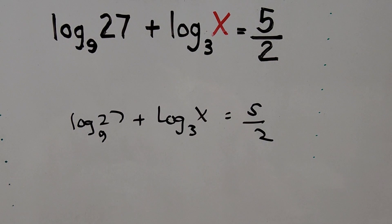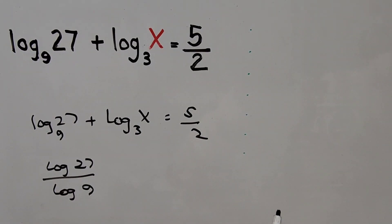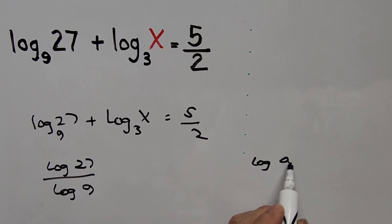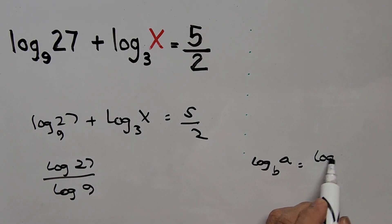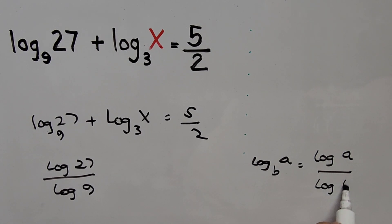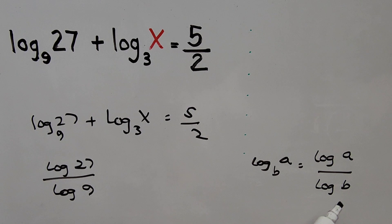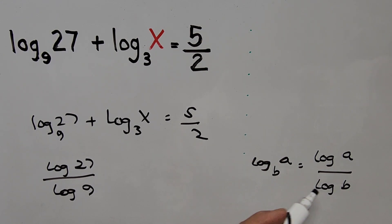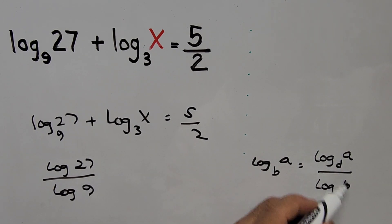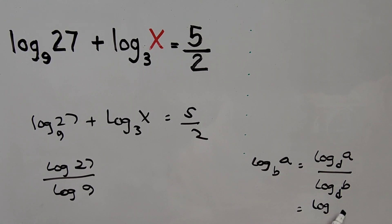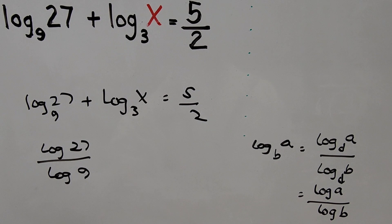Using the change of base formula, the first term can be written as logarithm of 27 divided by logarithm of 9. The change of base formula states that logarithm of a base b equals logarithm of a divided by logarithm of b, and you can use any base you want — base 10 or any other base — as long as the same base appears in both numerator and denominator. If no base is shown, it is assumed to be base 10.